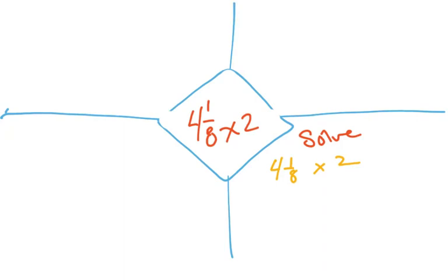I'm going to use that Texas method. And multiply 4 times 8 and then add 1. 4 times 8 is 32 plus 1 is 33 eighths times 2. 2 is actually 2 over 1.